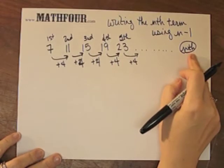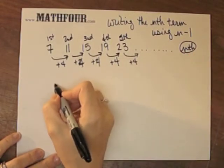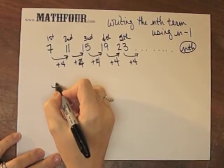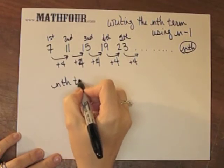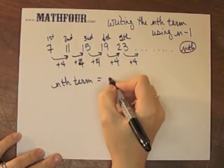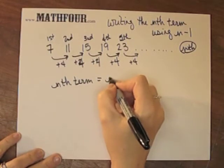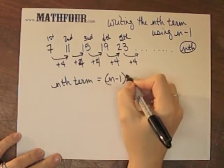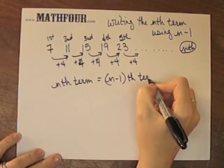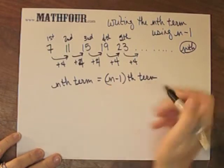So I can say, for the nth term, I take the previous term, n minus 1, and then I'm going to add 4.